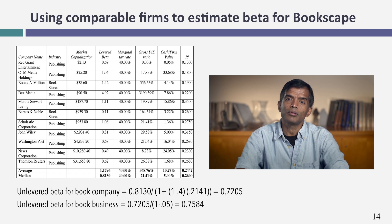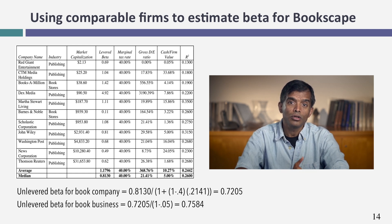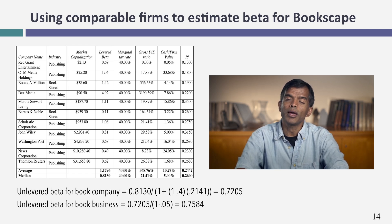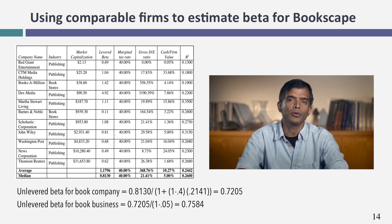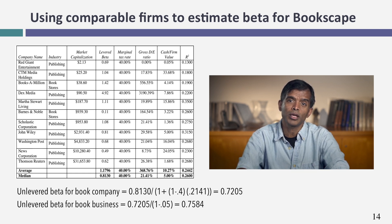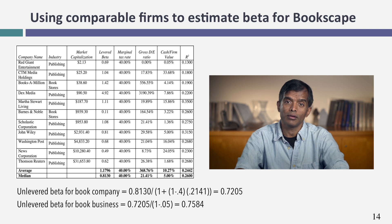I'll take you through an example of a bottom-up beta for a private business — an independent bookstore in New York City called Bookscape. The unlevered beta is based upon publicly traded book companies. Because there were too few publicly traded book retailers alone, I expanded the sample to include publishing companies. I take the average regression beta across these publicly traded book companies, unlever them using the public companies' debt-to-equity ratio, and adjust for cash as a percent of firm value to get a pure-play beta for the book business: 0.7584.